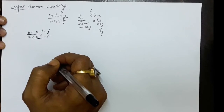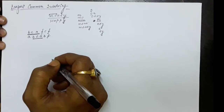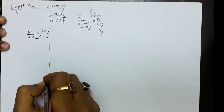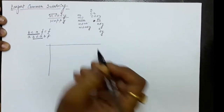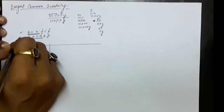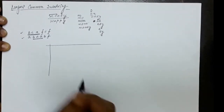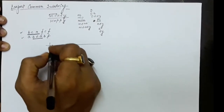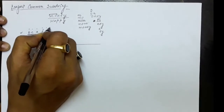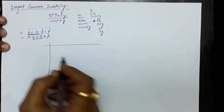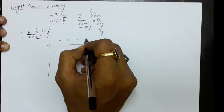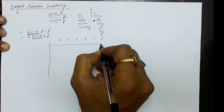The dynamic programming solution we are considering is a two-dimensional solution, because we will be making use of a memoization table, and that memoization table will have a size of 2D. On one side we will take the first string, and on the other side we will take the second string. The first string B, C, A, F, C, F has 6 characters and will be placed on the column side.